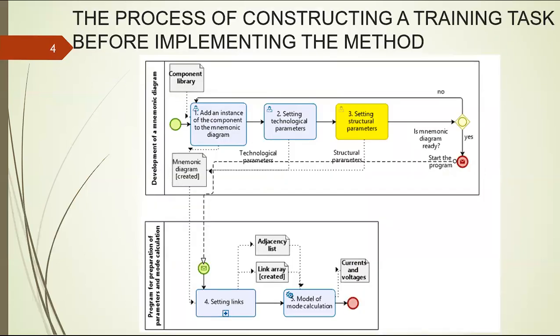Let's take a look at the process of constructing a training task before implementing the method. The process consists of five stages. The first three stages are made by the developer, as you can see by the human icon at the top left of these stages.